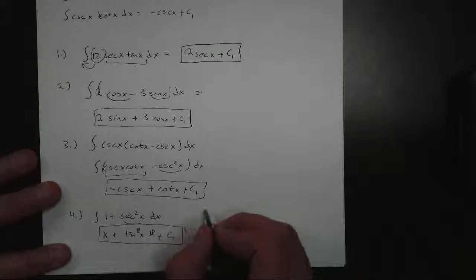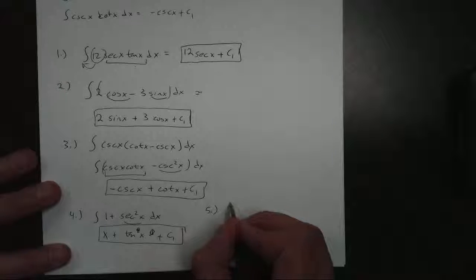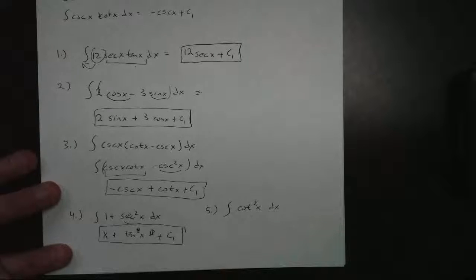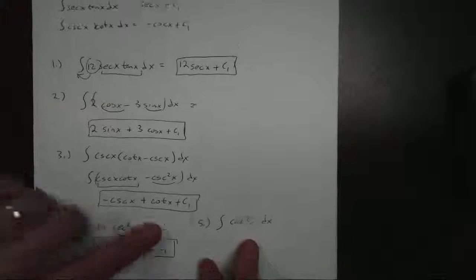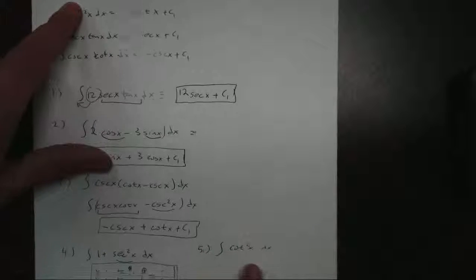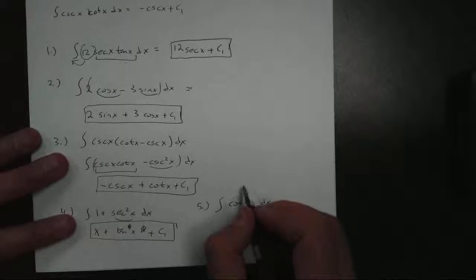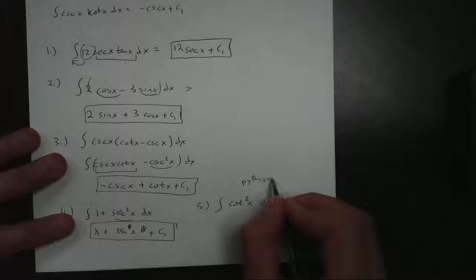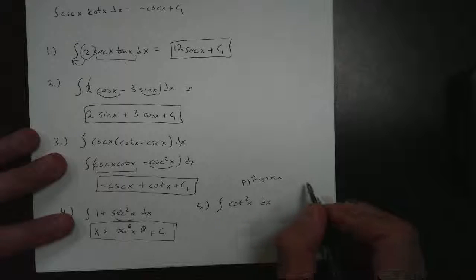But let's take a look at number five right here. What if I have something like this? The cotangent squared of x dx. I don't know that. That's not on my list. But here's a hint for you. Pythagorean.